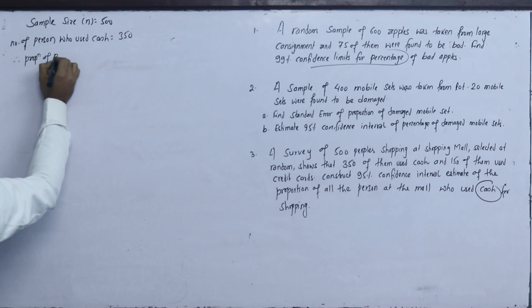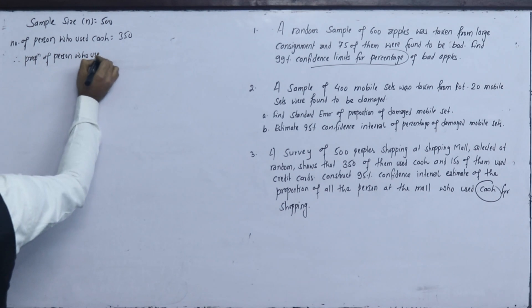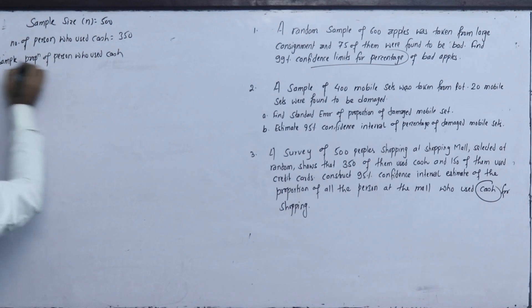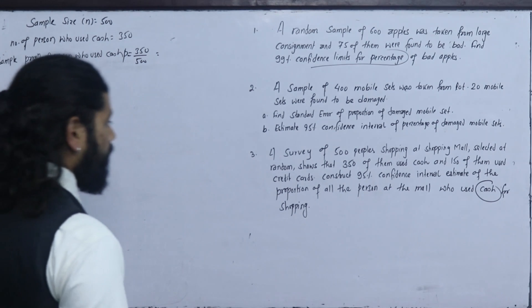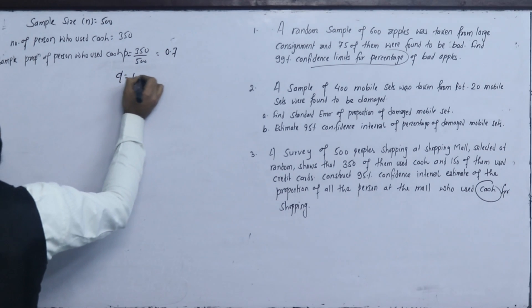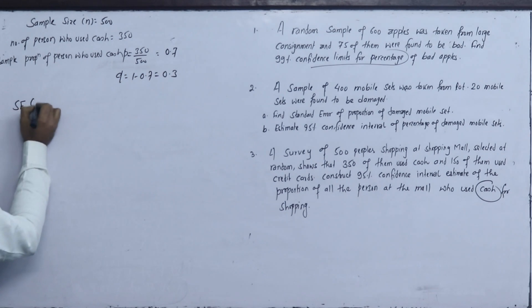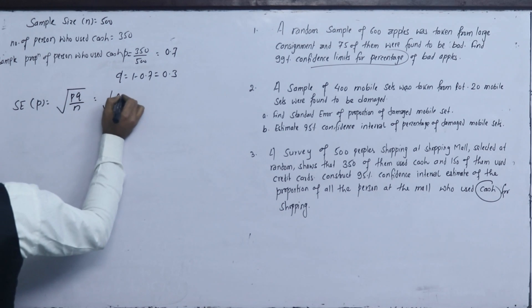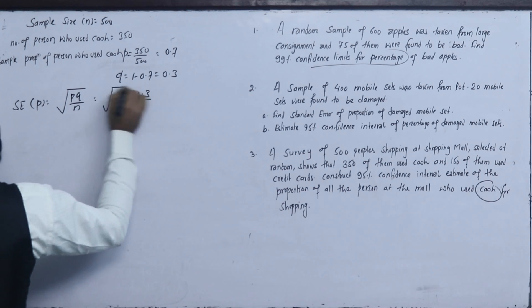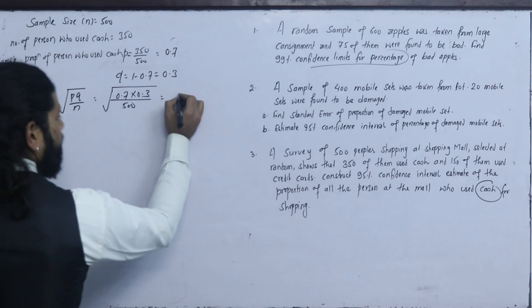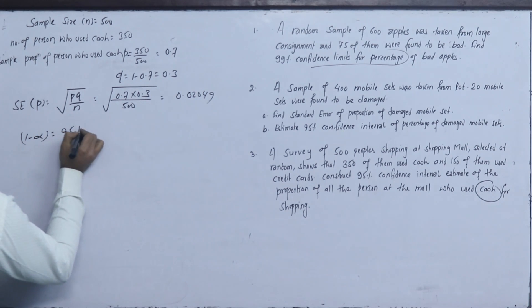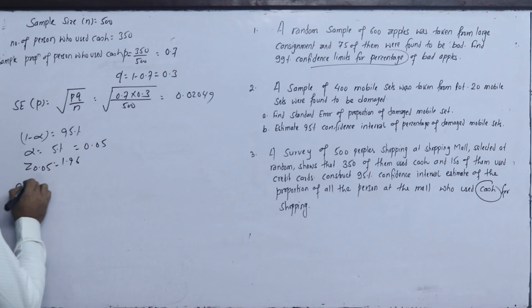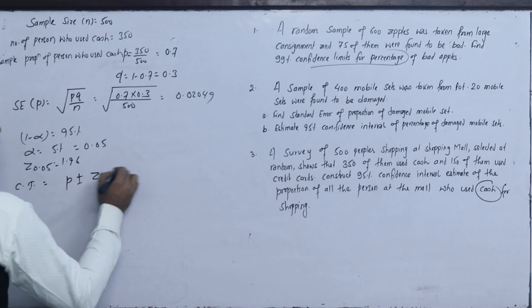Therefore, proportion of persons who use cash is 350 divided by 500 equals 0.7. q is 1 minus 0.7 equals 0.3. Standard error is square root of p times q over n - 0.7 into 0.3 upon 500, which equals 0.02049. For 95% confidence interval, 1 minus alpha equals 0.95, alpha equals 0.05, z value is 1.96.